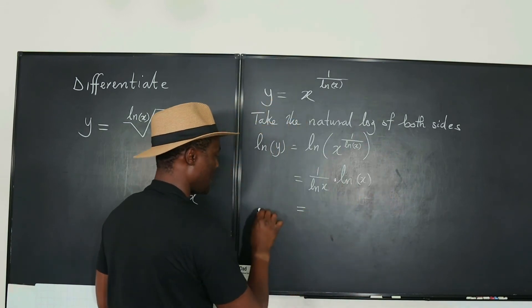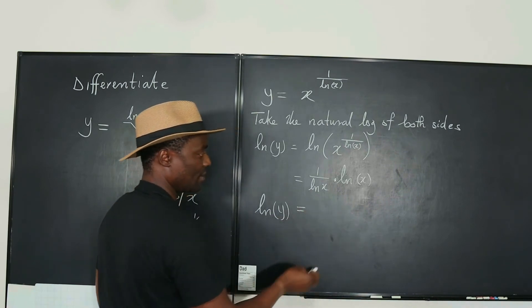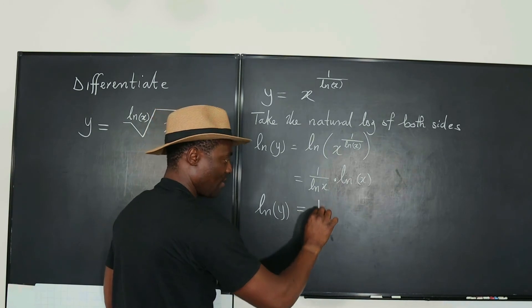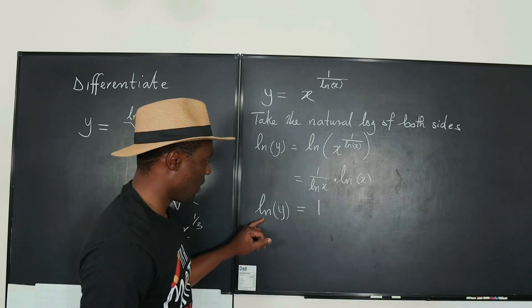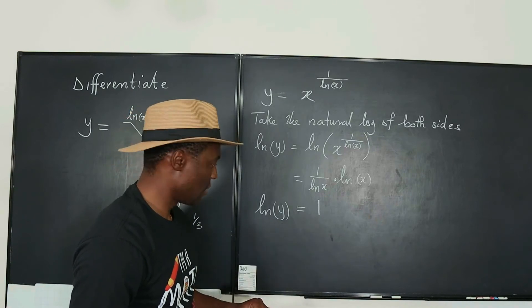This is beginning to look interesting. The natural log of y is equal to, well, this natural log of x can cancel this natural log of x and you get 1 here. So if the natural log of y is equal to 1, what is y?